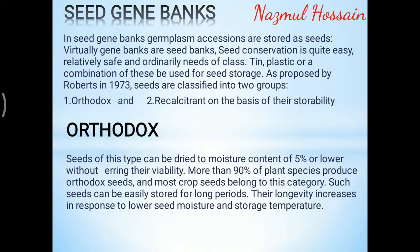Seed gene banks: in seed gene banks, germplasm accessions are stored as seeds. Seed conservation is quite easy and relatively safe. As proposed by Roberts in 1973, seeds are classified into two groups — orthodox and recalcitrant — on the basis of their storability. Orthodox seeds can be dried to a moisture content of 5% or lower without harming their viability. More than 90% of plant species produce orthodox seeds, and most crop seeds belong to this category. Such seeds can be easily stored for long periods; their longevity increases with lower seed moisture and storage temperature.